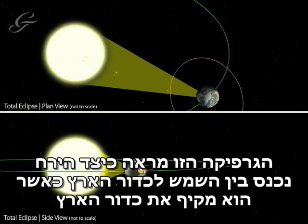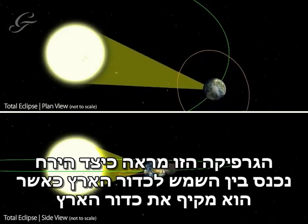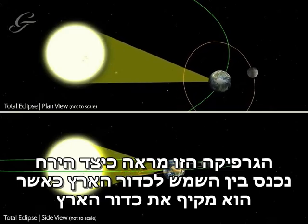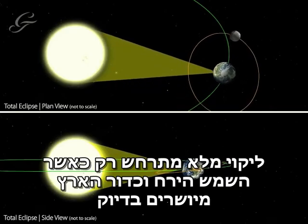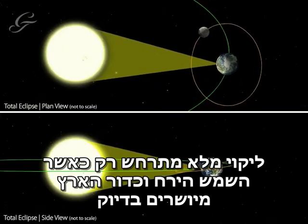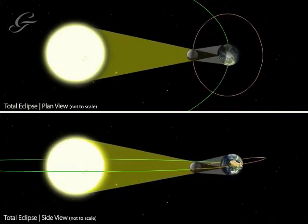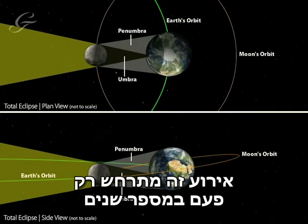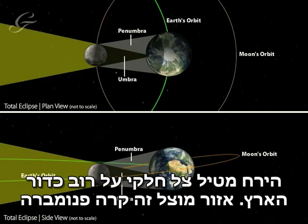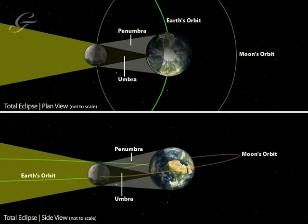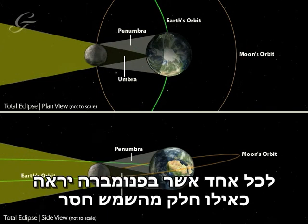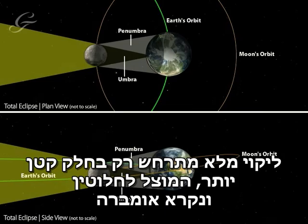This graphic shows how the Moon comes between the Sun and the Earth as it orbits around the Earth. An eclipse can only happen when the Sun, Earth and Moon are perfectly aligned, a situation that occurs just once every few years. The Moon casts a partial shadow over most of the Earth, called the penumbra, and anyone within this region will see a chunk taken out of the Sun. A total eclipse only occurs within the much smaller total shadow, or umbra.